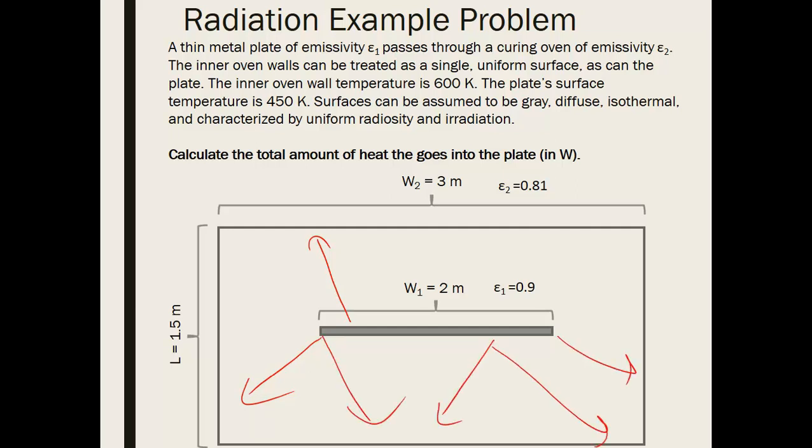And ultimately that will be intercepted. Everything leaving this plate will be intercepted by the inner oven walls. So what does that tell us? It tells us that the view factor F12 is equal to one.